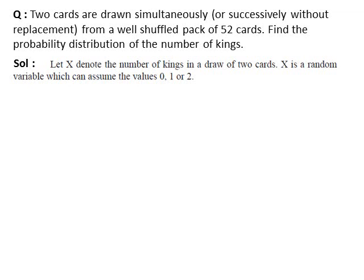Let x denote the number of kings in a draw of two cards. x is a random variable which can assume the values 0, 1, or 2 — meaning no king, one king, or two kings. A pack of 52 cards contains 4 kings and 48 other cards.